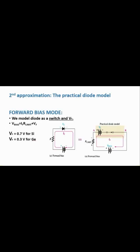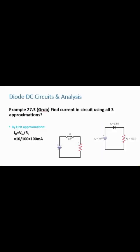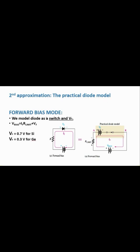Moving on to the practical diode model. In this model, in forward bias mode, we model the diode as a closed switch in series with Vf, where Vf is the barrier potential of the diode. This value depends on the material: for silicon Vf is 0.7 V, and for germanium Vf is 0.3 V. These values are fixed when using the practical diode model.